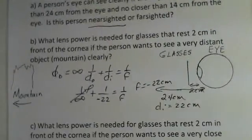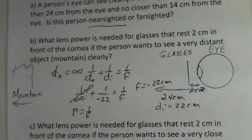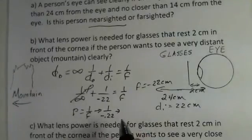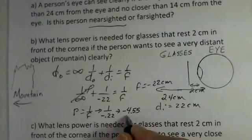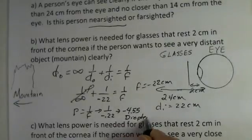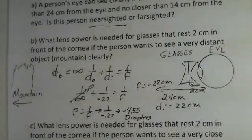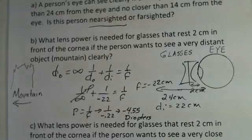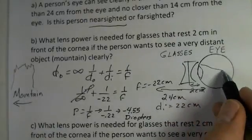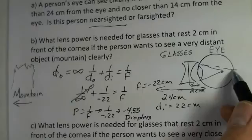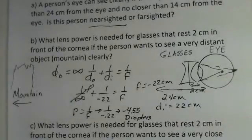And in calculating the power, the power is 1 over F, but F has to be in meters. So this would be 1 over minus 0.22. And we'd come up with minus 4.55 diopters. This is a negative lens. A minus focal length. So we're going to need a negative lens to help this person see the mountain clearly. The problem was that the mountain was becoming focused too early. So we need some diverging power out in front of the eye to move the mountain to be focused on the retina.